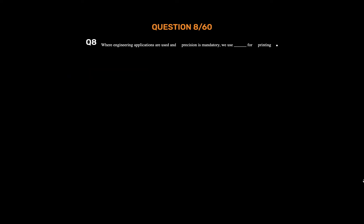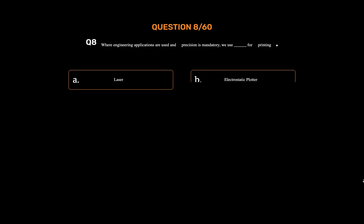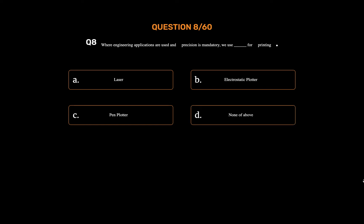Question number eight. Where engineering applications are used and precision is mandatory, we use underscore for printing. Option A: Laser. Option B: Electrostatic Plotter. Option C: Pen Plotter. Option D: None of the above. The correct answer is Option C: Pen Plotter.